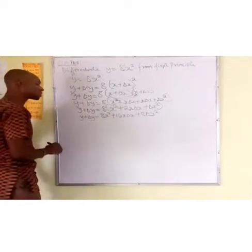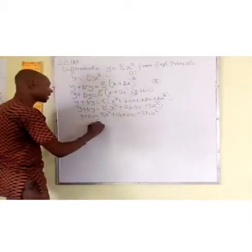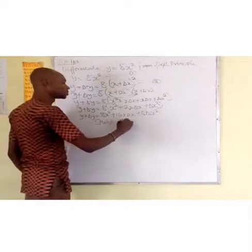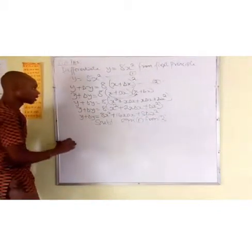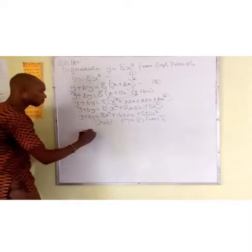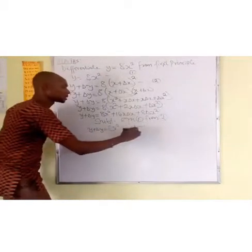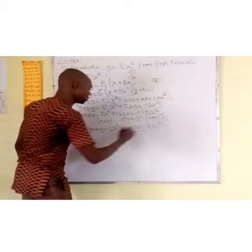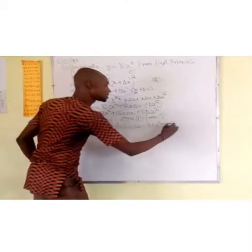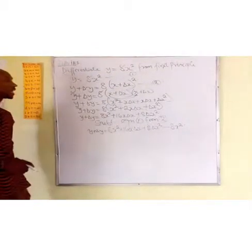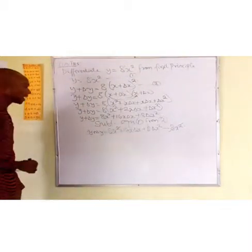Now if you ask yourself what to do — you will subtract. You can call this equation 1 and this equation 2. So subtracting equation 1 from equation 2: y plus Δy equals 8x squared plus 16x·Δx plus 8Δx squared, minus equation 1 which is 8x squared. Now 8x squared will cancel out 8x squared.